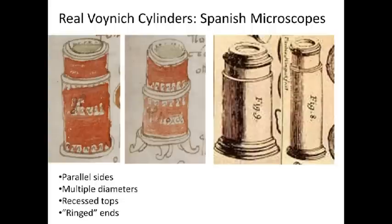These are not really jar-like features, but optical features. Also, they have recessed tops, which is an optical feature very often seen on microscopes and telescopes even to this day. They also have a greenish or greenish-blue tint, which is found on early optical devices because of impurities in the glass - sometimes put there on purpose. And the ends of the cylinders in the Voynich have ringed ends. If you look at the Spanish microscopes, you see these same ringed ends, because they were usually turned out of wood and slid into the tubes, with lenses slid inside of them.